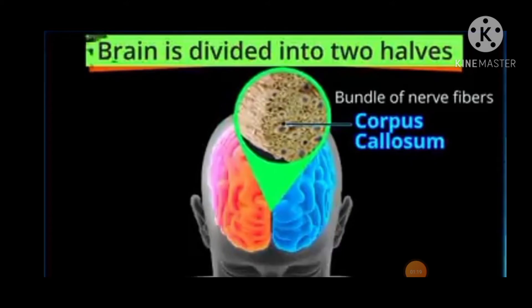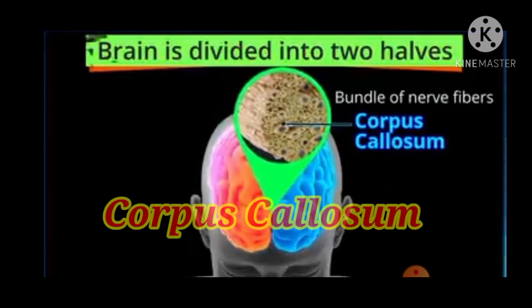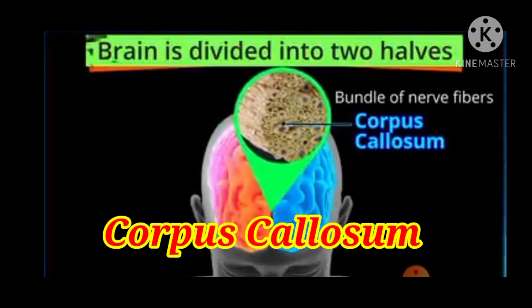The brain has a right hemisphere and a left hemisphere, and they are joined by a bundle of nerve fibres known as the corpus callosum.